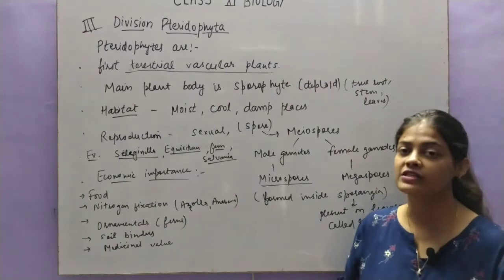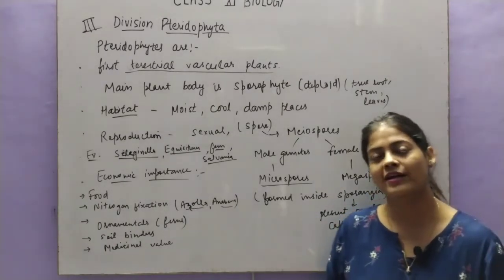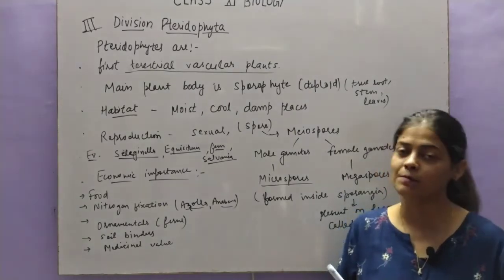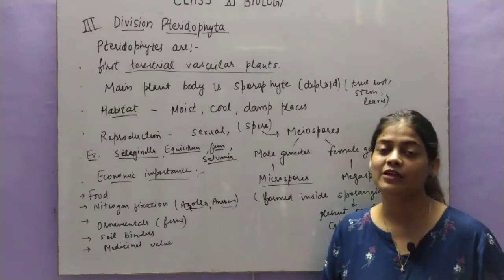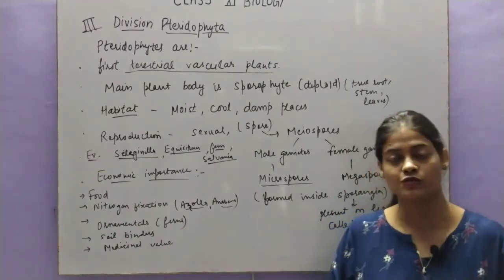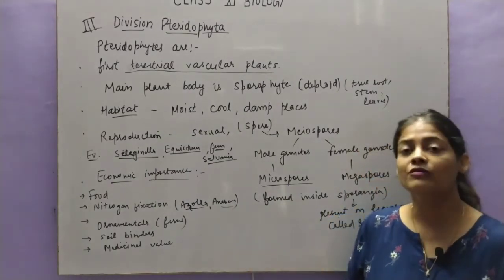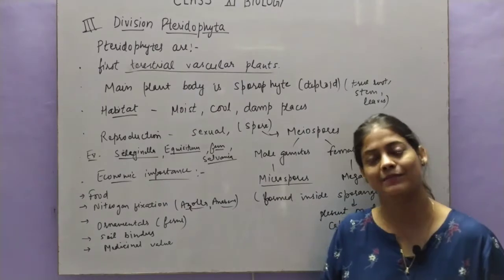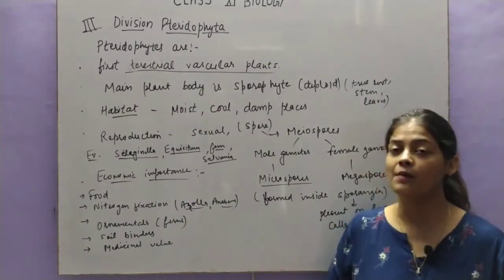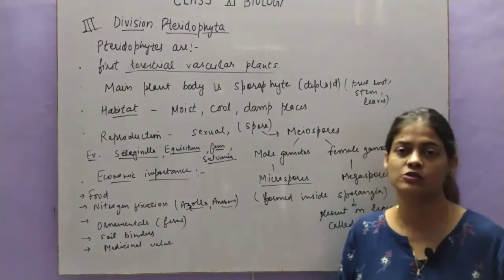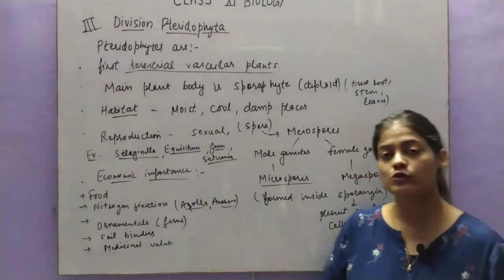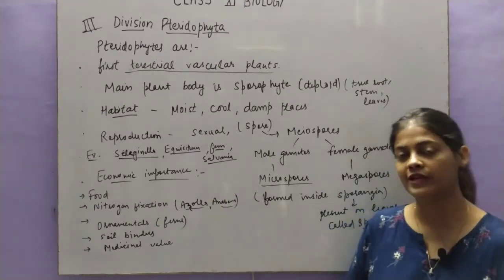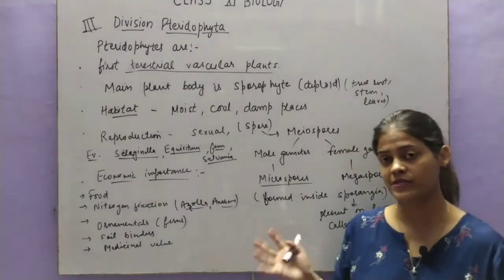Sometimes they also help in nitrogen fixation — for example, Azolla and Anabaena are species that help in nitrogen fixation. Next is ornamental value: now they have taken proper plant shape with proper leaves, stems, and roots, so they look beautiful. Ferns especially have a beautiful structure and look very attractive. They also act as soil binders — they help keep soil together and protect it from erosion because proper roots have developed. They also have medicinal value and are used to make certain drugs.